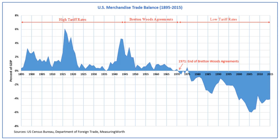Preparing to rebuild the international economic system while World War II was still raging, 730 delegates from all 44 allied nations gathered at the Mount Washington Hotel in Bretton Woods, New Hampshire, United States, for the United Nations Monetary and Financial Conference, also known as the Bretton Woods Conference. The delegates deliberated during 1–22 July 1944, and signed the Bretton Woods Agreement on its final day.